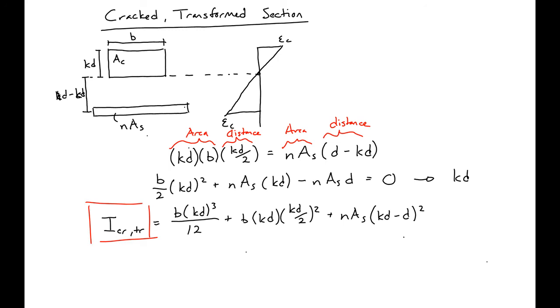So the important properties that we'll need out of this are KD, or the depth of the neutral axis, and our I_cracked transformed.